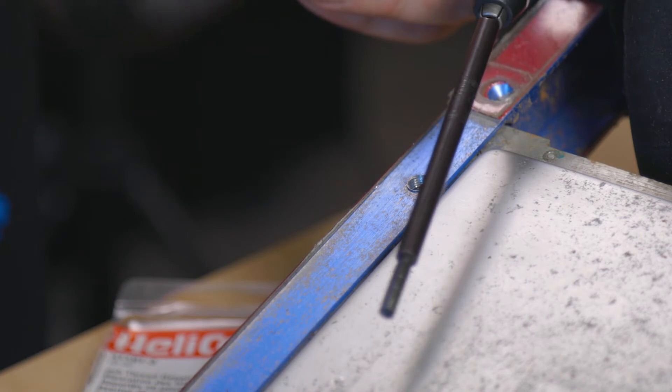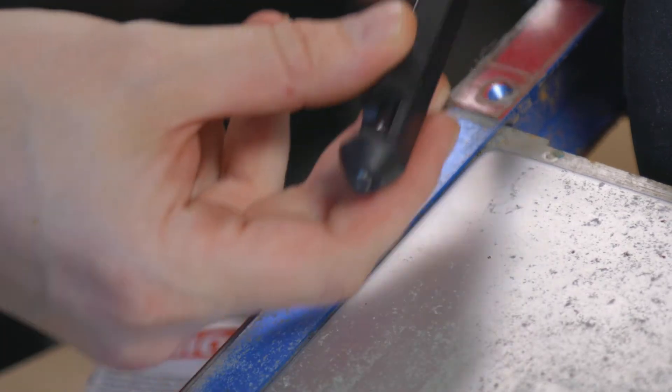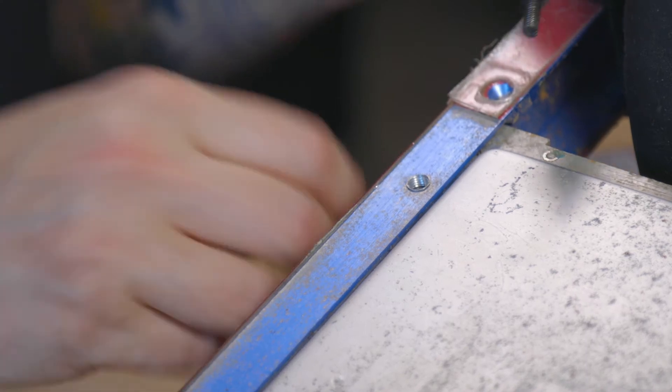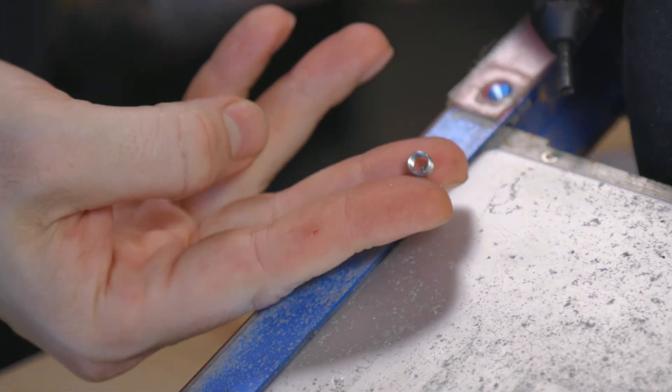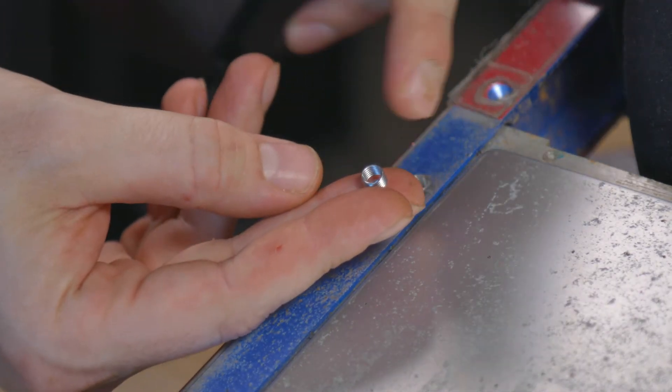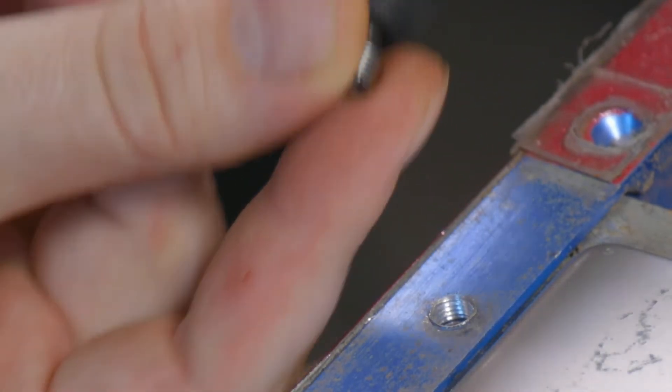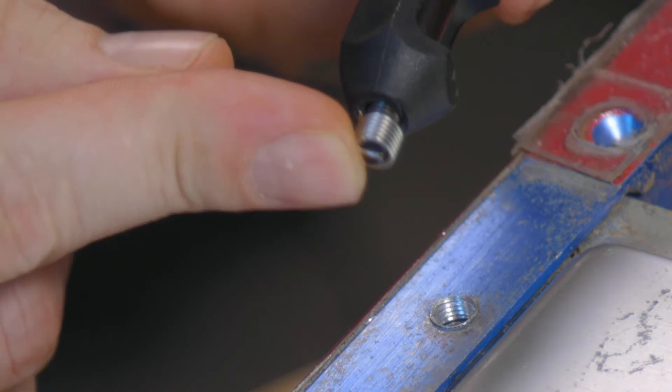Alright so now you're going to go ahead and take your insert tool and slide it into this plastic with the rounded part at the bottom. Go ahead and take your helicoil with again the tang pointed downward and put it right inside like that. And so the tang will catch on to the bottom of the insert tool.